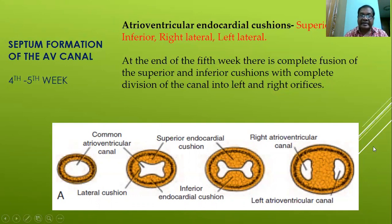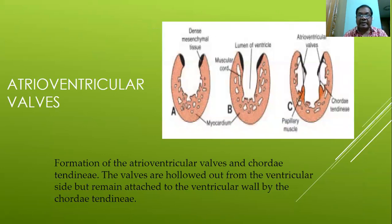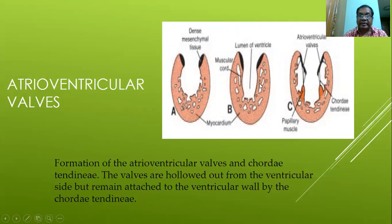Regarding AV valve formation and chordae tendineae: the valves are hollowed out from the ventricular side but remain attached to the ventricular wall by the chordae tendineae. The lacunae appear and the valve is initially connected to the ventricular wall by muscular cords, which are later replaced by tendinous cords known as chordae tendineae.